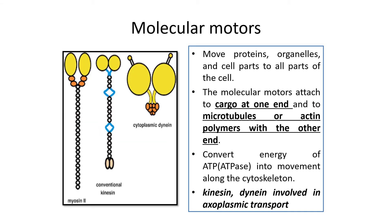Three types of molecular motors exist: myosin, kinesin, and dynein. Kinesin and dynein are primarily involved in axoplasmic transport. They attach on one side to the cargo and on the other side to the microtubule, then move along the microtubule through the conversion of ATP into ADP — which is why they are called molecular motors, as they drive the cell transport mechanism.